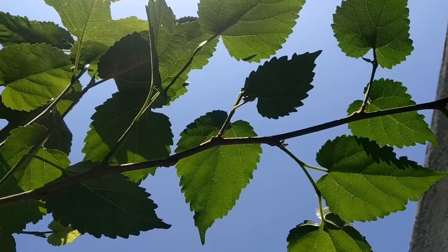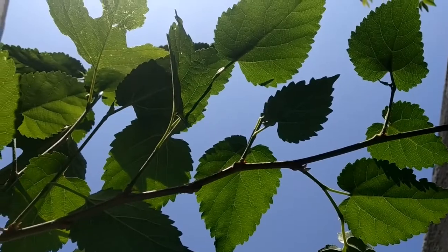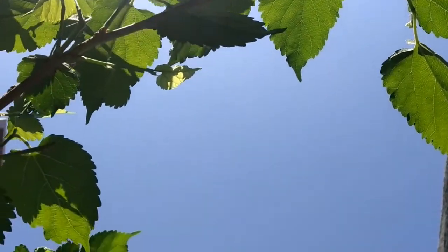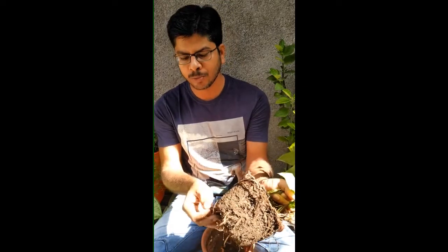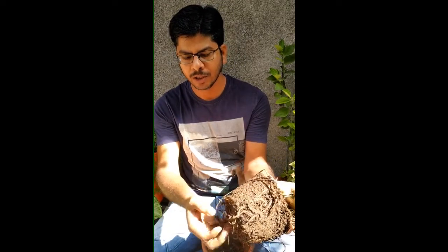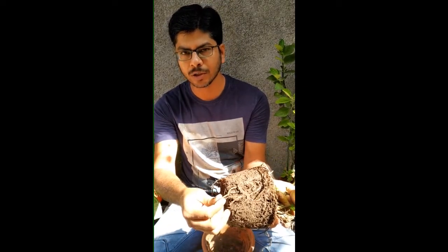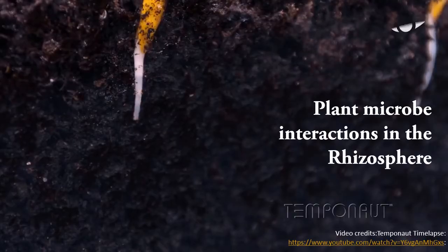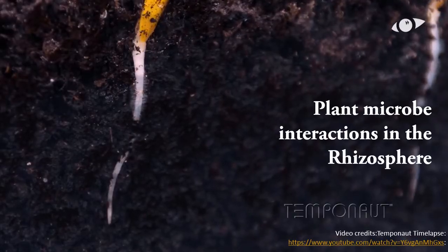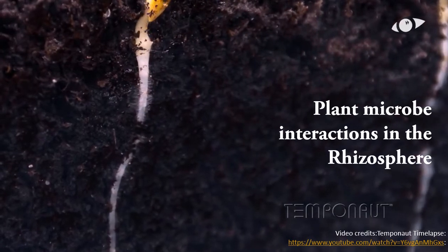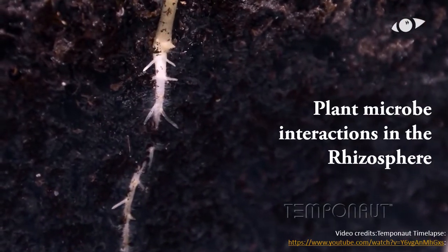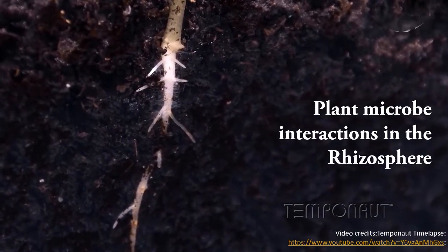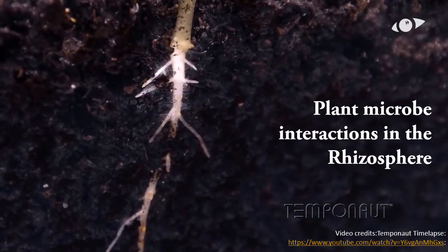Plants need leaves for synthesizing sugars by photosynthesis using sunlight and carbon dioxide from the air, while the roots provide mineral nutrients and water required for this process. The architecture of the entire plant depends on the ability of the root tips to sense signals from its environment. In this video lecture, we will discuss plant-microbe interaction in the rhizosphere.